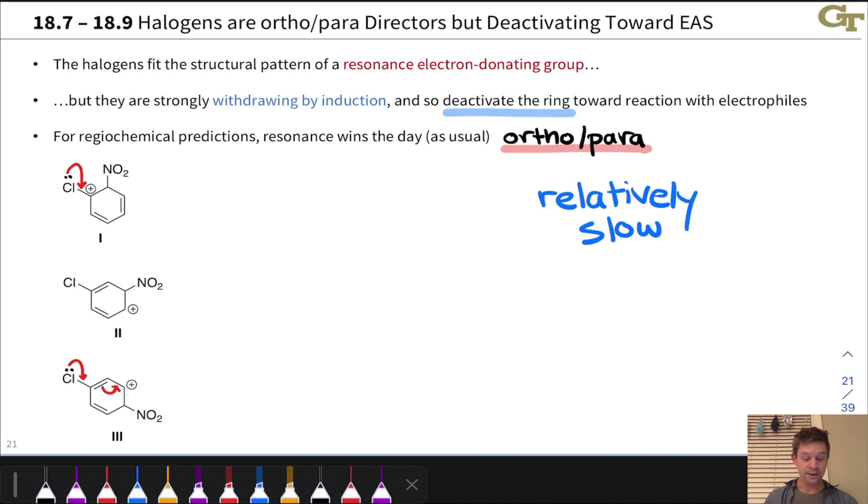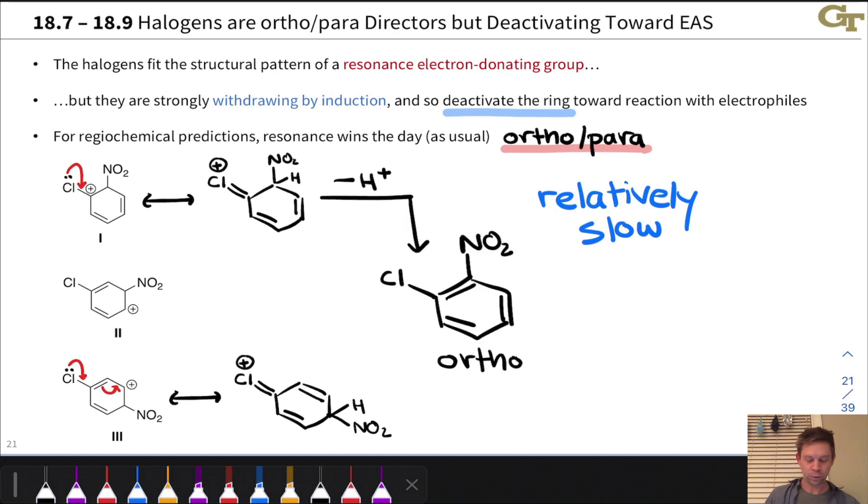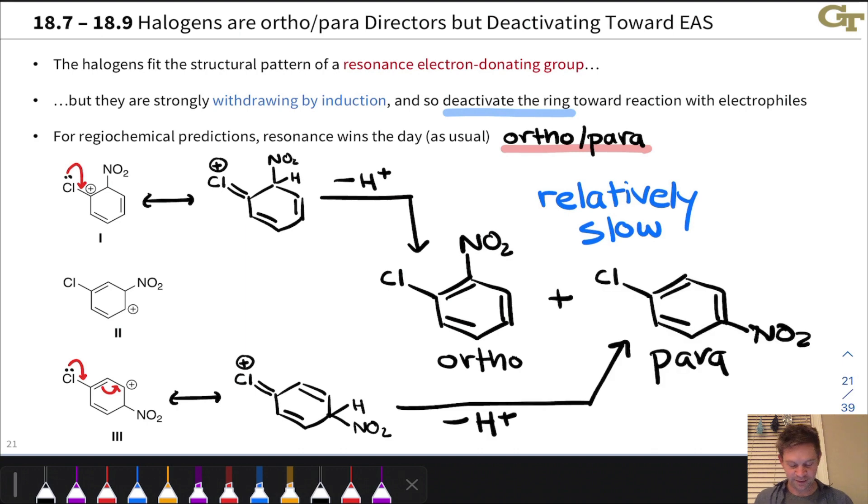This is because the arenium ions associated with ortho- and para-substitution have this additional resonance structure that shows the delocalization of positive charge, at least formally, onto the halogen atom slightly. So we end up with the ortho-product via that ortho-substituted arenium ion and the para-product via the para-substituted arenium ion.